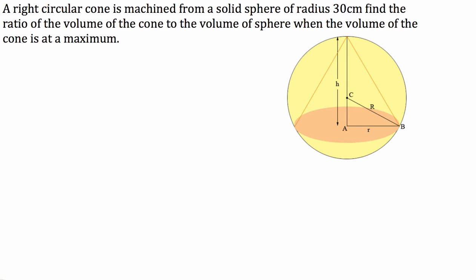Hi guys, today we're doing an optimisation question where we have a right circular cone that is machined from a solid sphere of radius 30 centimetres. We have to find the ratio of the volume of the cone to the volume of the sphere when the volume of the cone is at a maximum.